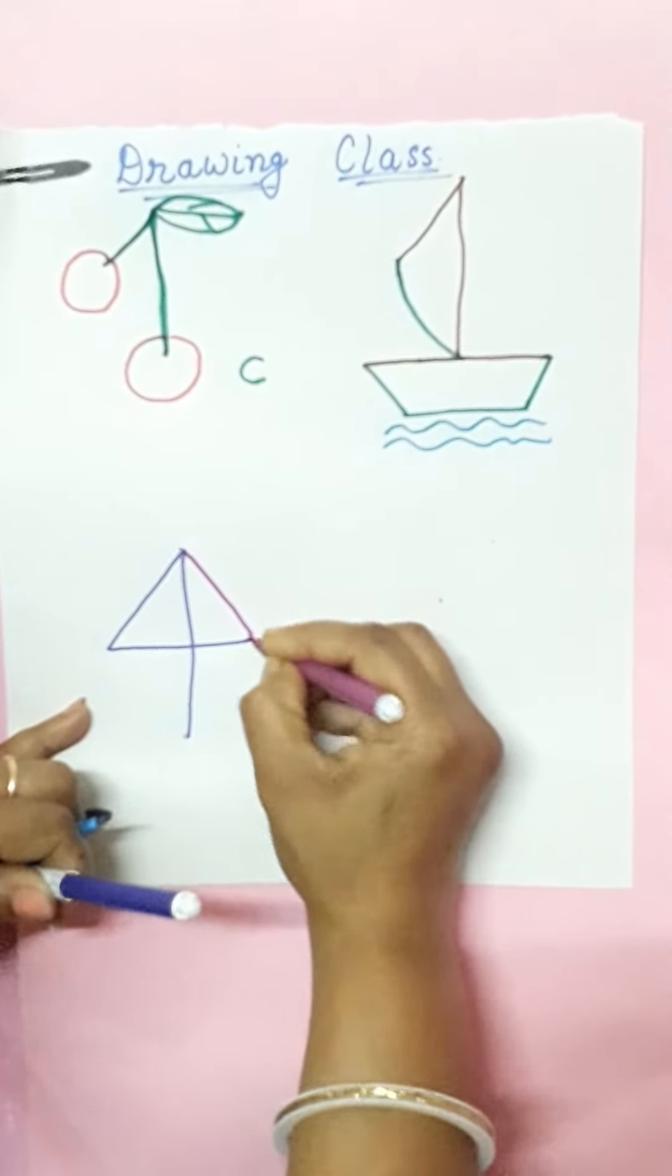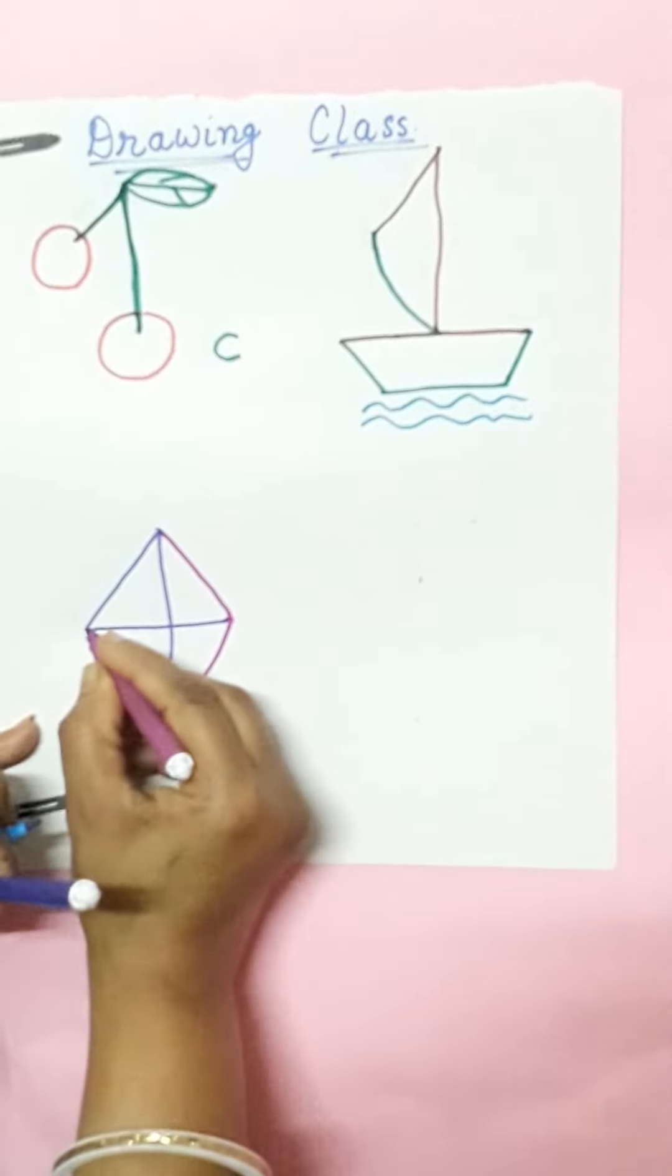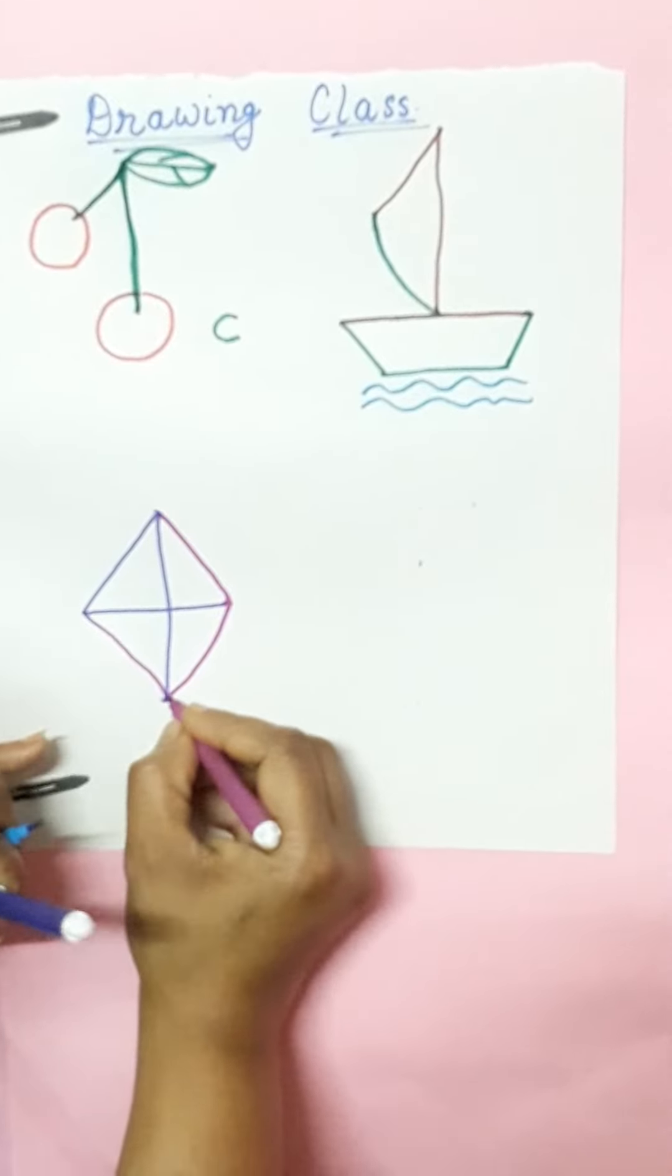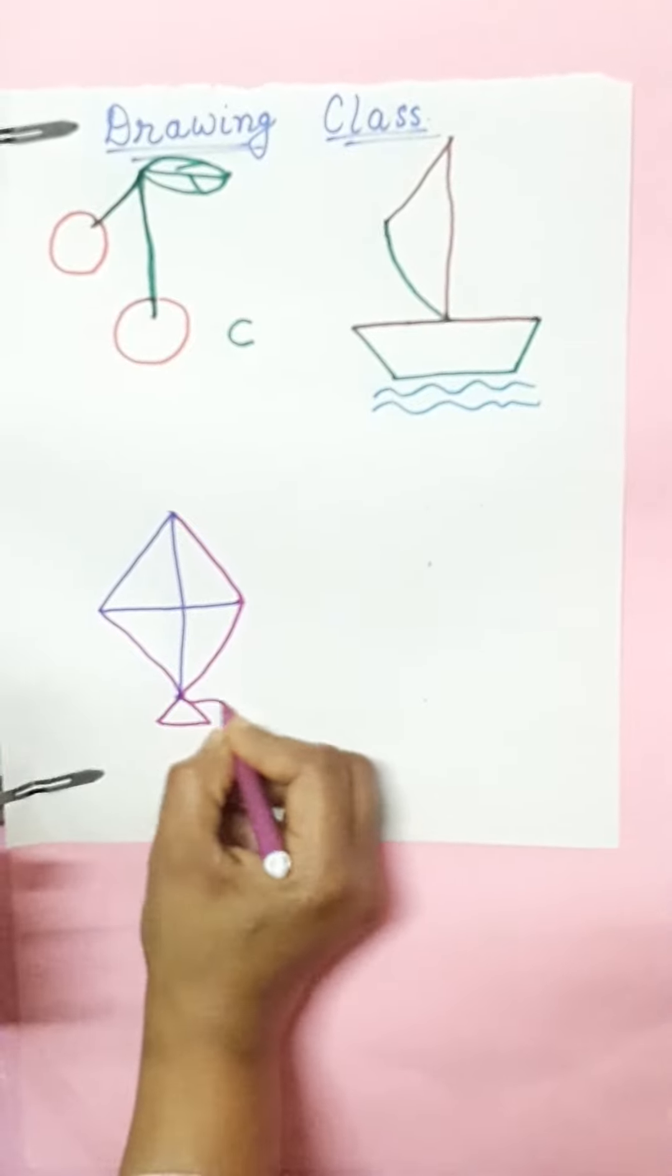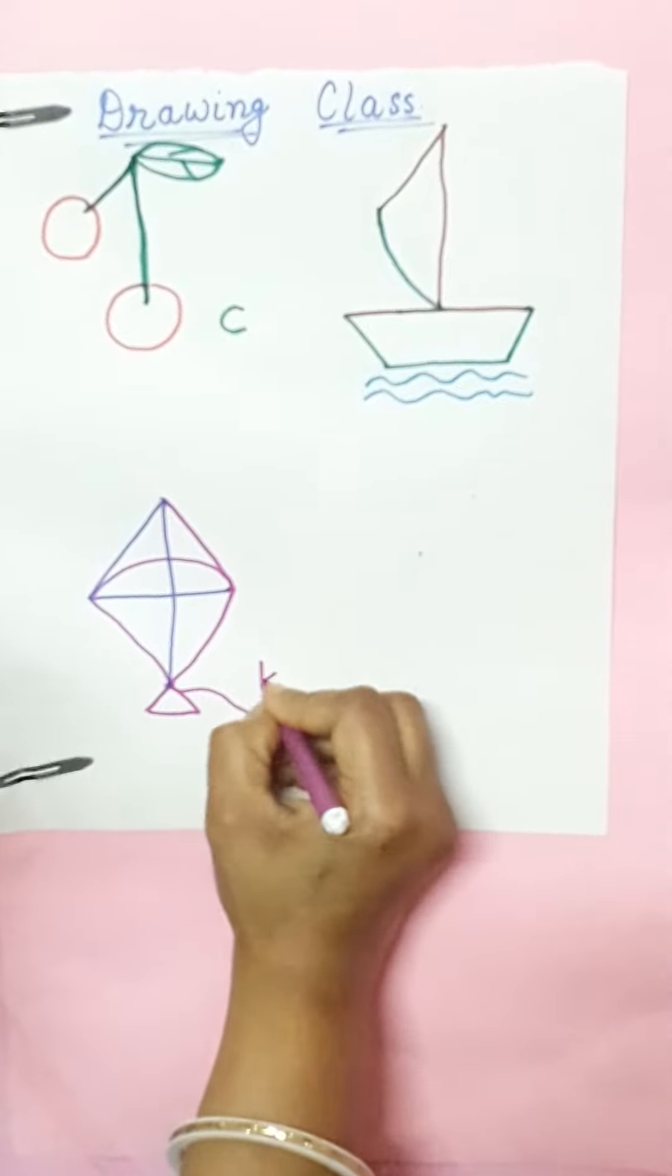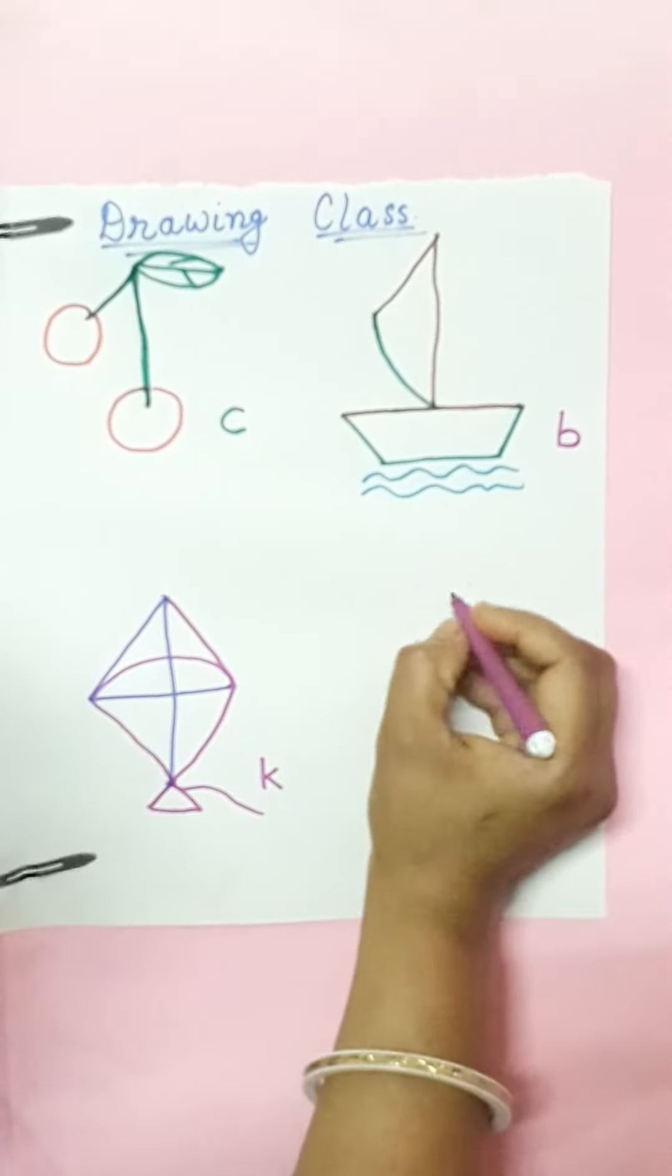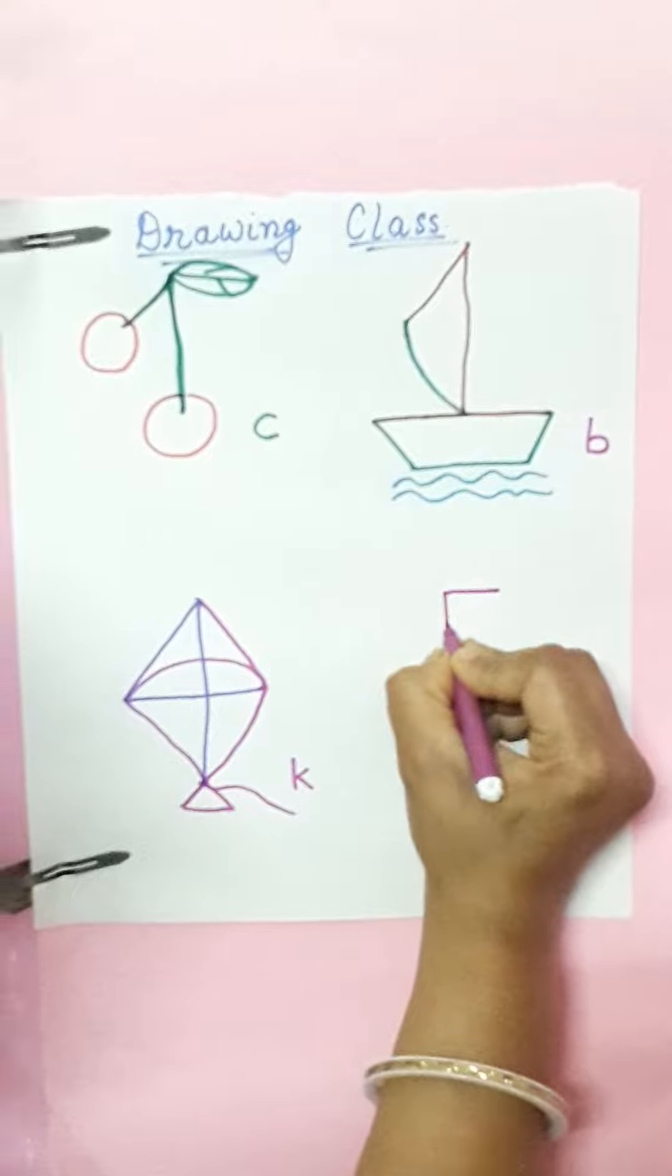Join this point here. Again you make a slanting line, again a slanting line. Now what it is? You can tell me, again make a slanting line, slanting line and a slanting line. This becomes a slanting line, slanting line.